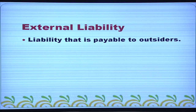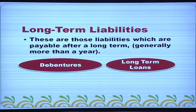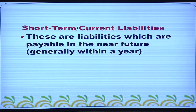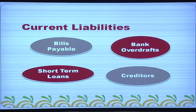External liability is the liability that is payable to outsiders other than the owners. Internal liability is the liability that is payable to the owners. Long-term liabilities are those liabilities which are payable after a long term, generally more than one year. Debentures and long-term loans are examples of long-term liabilities. Short-term liabilities are payable within a year — bills payable, bank overdraft, short-term loans, and creditors are short-term or current liabilities.